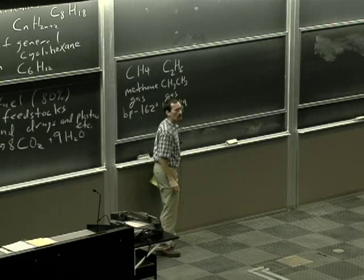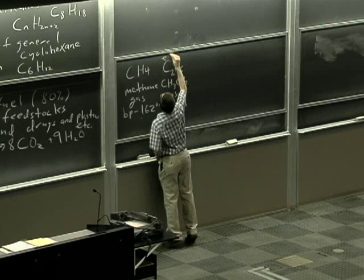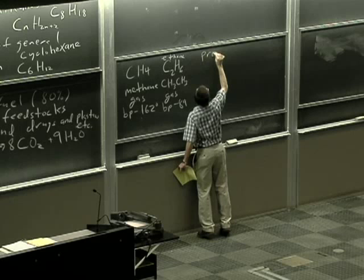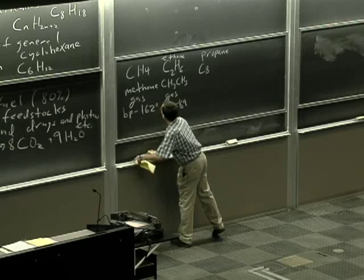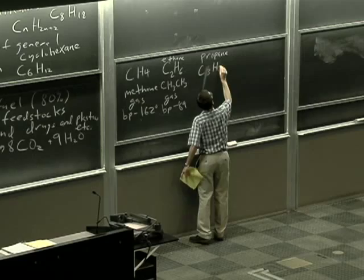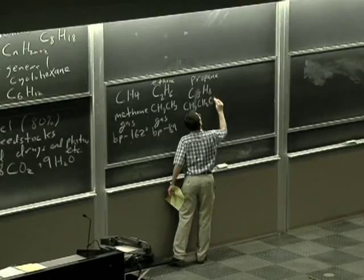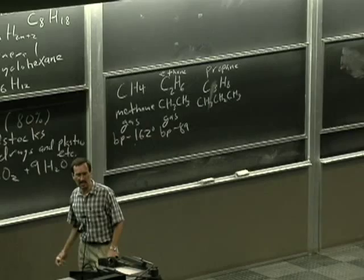Moving along the series, oh, and I should write out the name here. Moving along the series, propane C3H8, in other words CH3CH2CH3. Propane's also a gas, but propane is interesting because by the time you get to propane, if you apply enough pressure at room temperature, you can liquefy it.